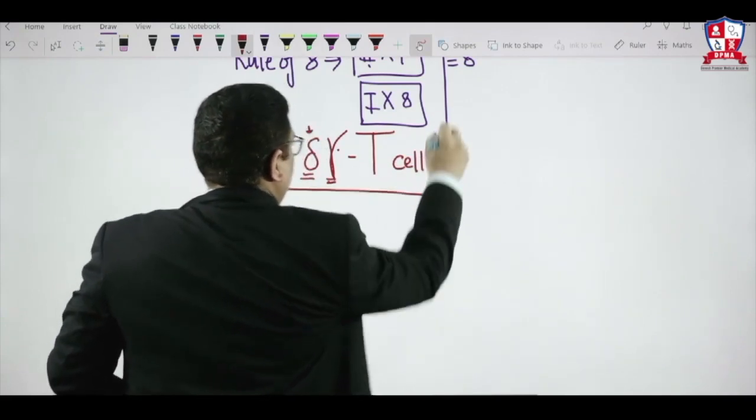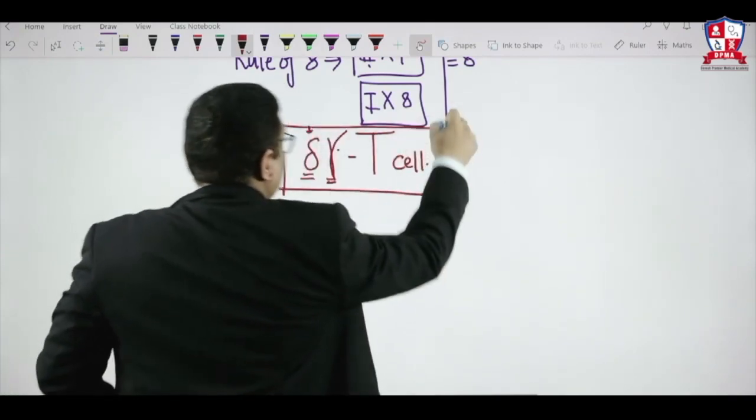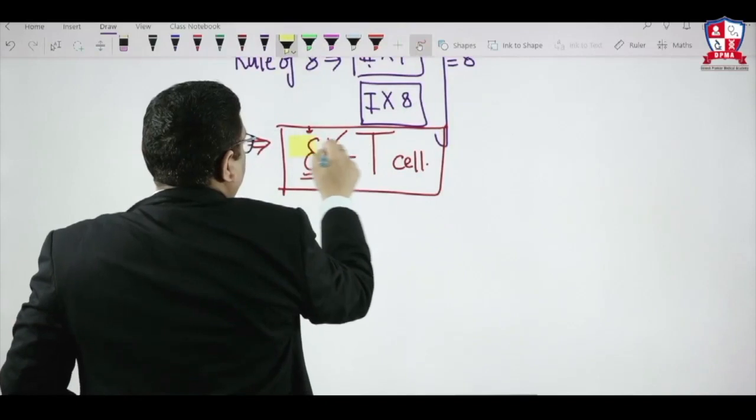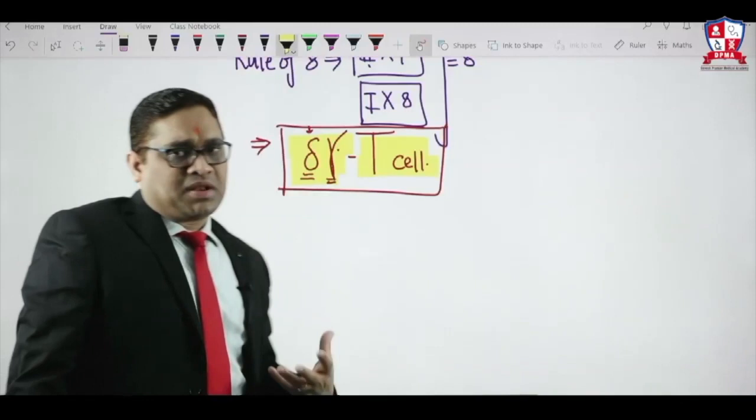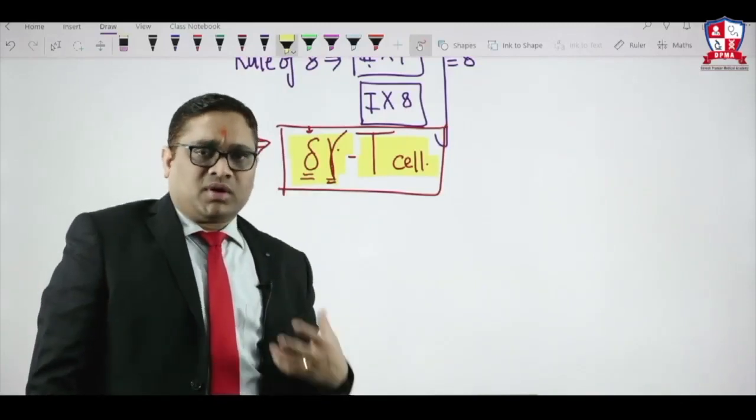So this point we have to keep in mind. This was the question in this AIIMS exam: gamma delta T cell. What is the feature of gamma delta? These are the new cells which has been evolved in recent concept of immunology.